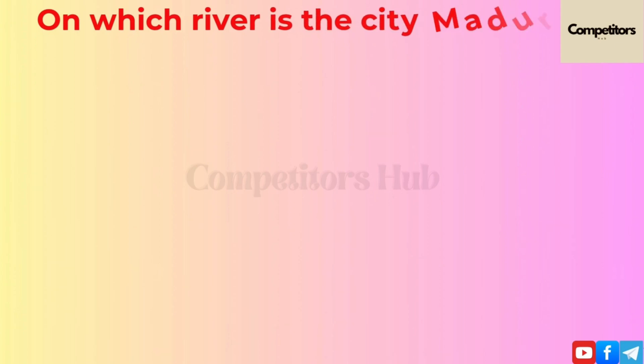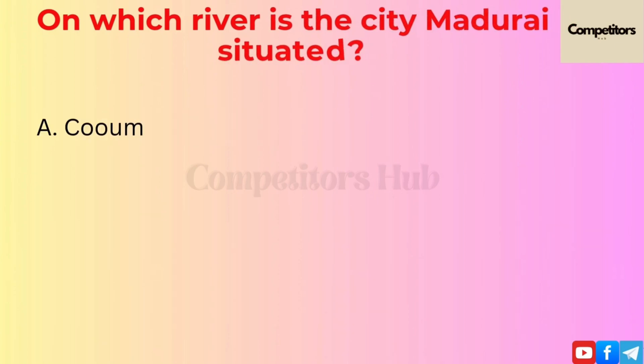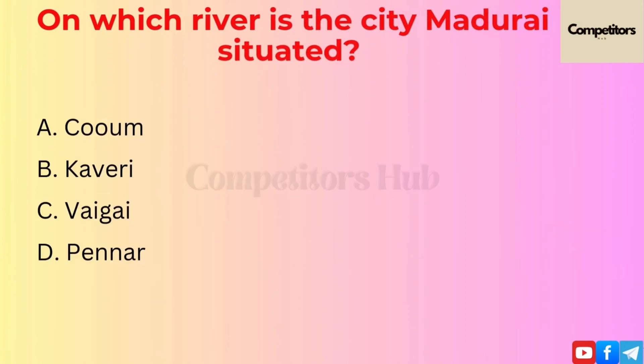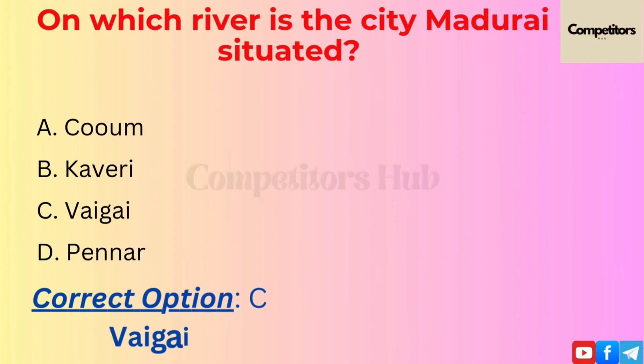The next question is: on which river is the city of Madurai situated? Option A: Kuvam. Option B: Kaveri. Option C: Vaigai. Option D: Pennar. The correct option is C, Vaigai.